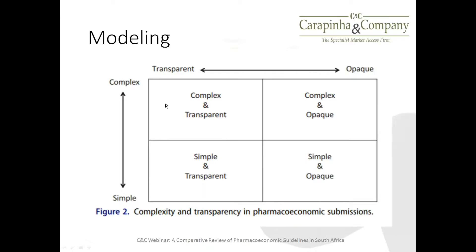Having read the pharmacoeconomic guidelines in South Africa and compared them to other countries, it's useful to disaggregate two related concepts: first, the complexity versus simplicity of the pharmacoeconomic guidelines, and then on a different axis, transparency versus opacity. Ideally, where we want to be is in the quadrant of developing complex and transparent guidelines. The complexity of newer technologies being introduced in oncology, rare diseases, cardiovascular disease, and obesity — these are complex molecules with complex mechanisms of action — means the economic modeling and clinical practice results are also complex.